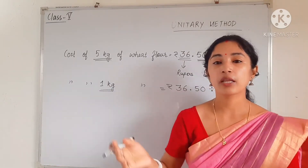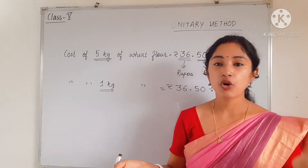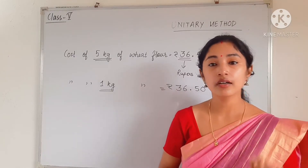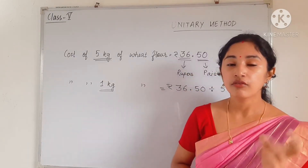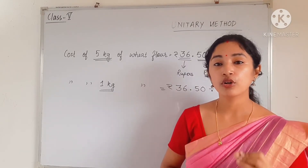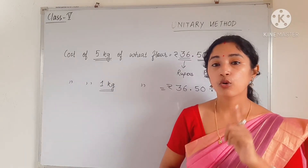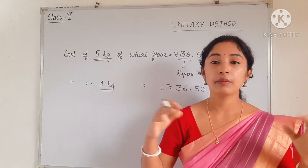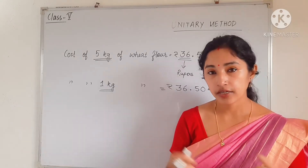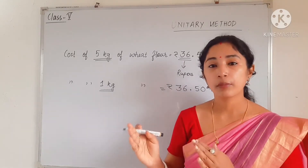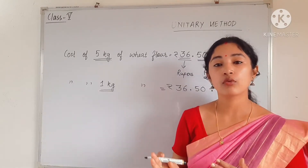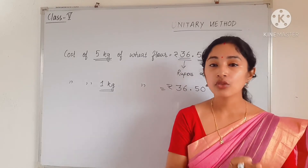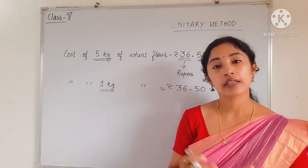Similarly, if the cost of many items is given and we want to find the cost of one item, we can use the operation of division. Using division, the number becomes smaller. For example, if you divide 100 by 2 you get 50, which is smaller than 100. So whenever we want to find the cost of one item, we use division.